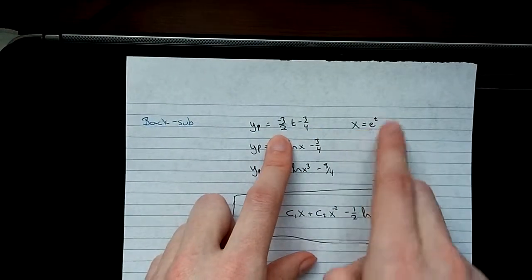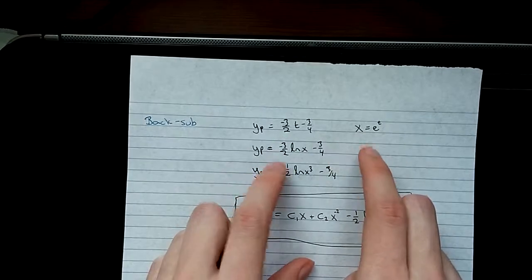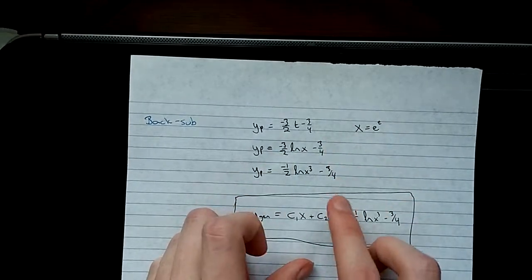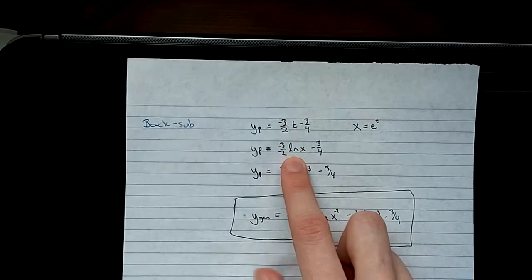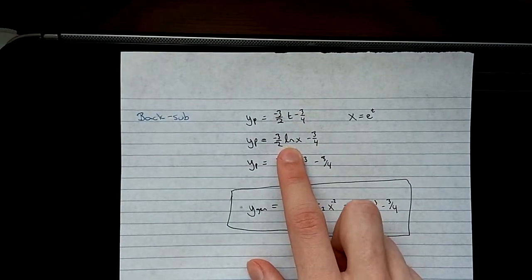Remember, we did this when we did our transformation. So we're just going to reverse that, put it back in. And you get this, which is negative 3 halves natural log x minus 3 quarters.